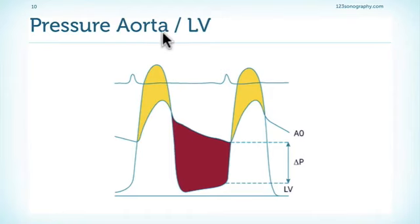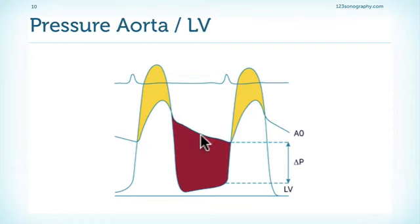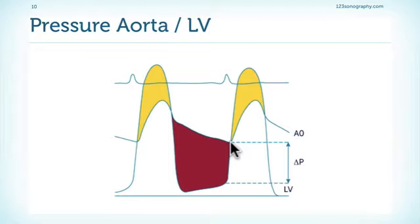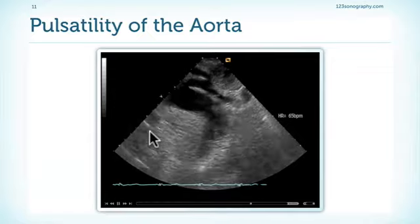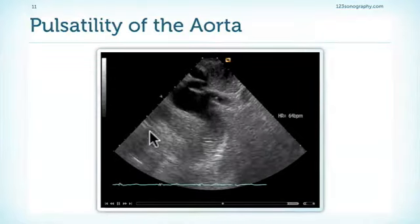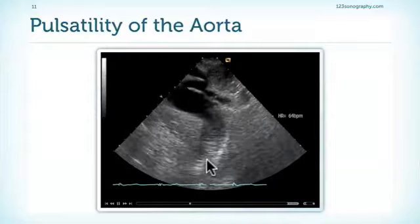A pressure tracing between the aorta and left ventricle shows that during diastole there is a fairly rapid pressure equilibration between the two chambers, caused by regurgitant flow returning to the left ventricle. As a result, end-diastolic pressure in the aorta is low, explaining why patients with aortic regurgitation have low diastolic blood pressures. This also explains the strong pulsatility visible in vessels, including in the suprasternal view of the aorta.